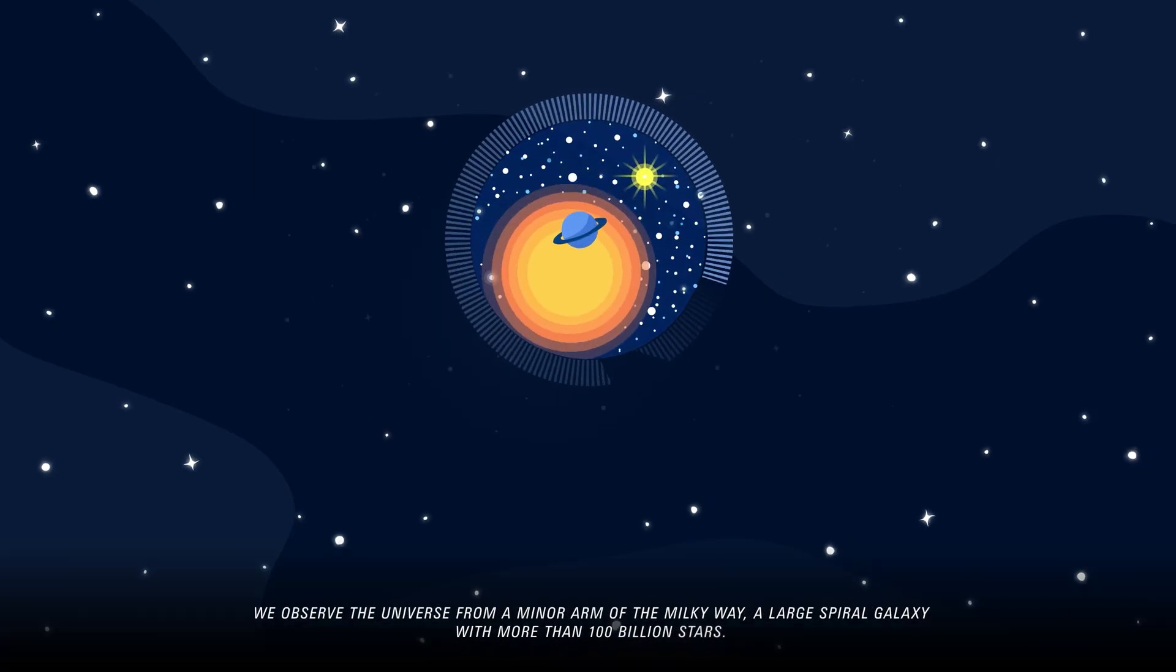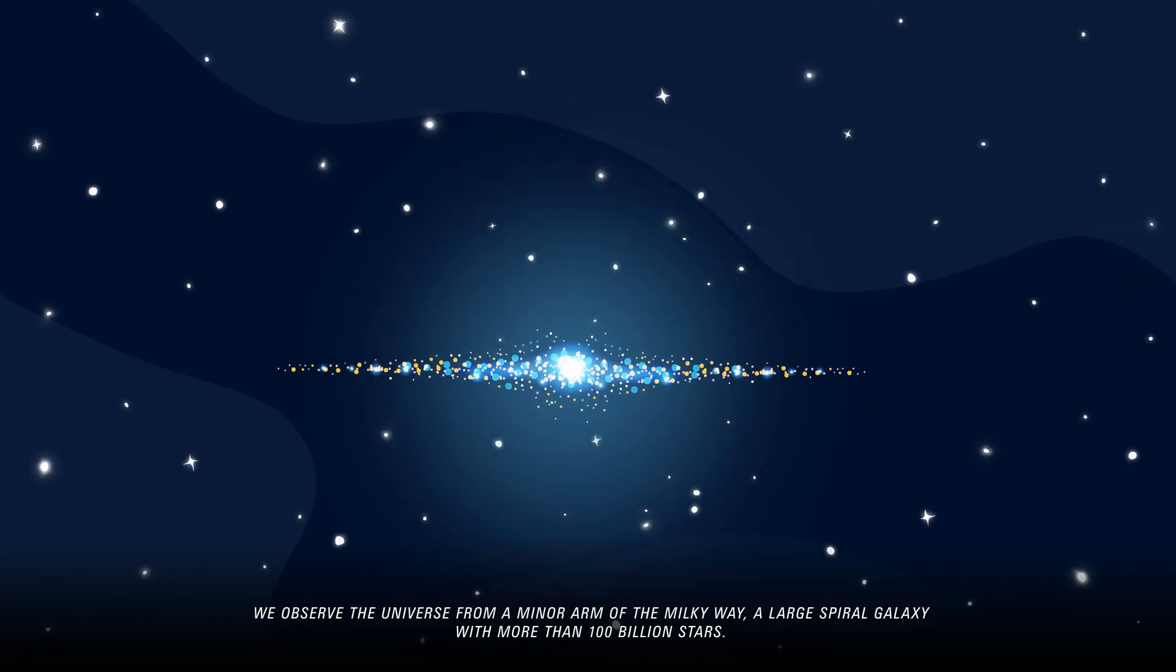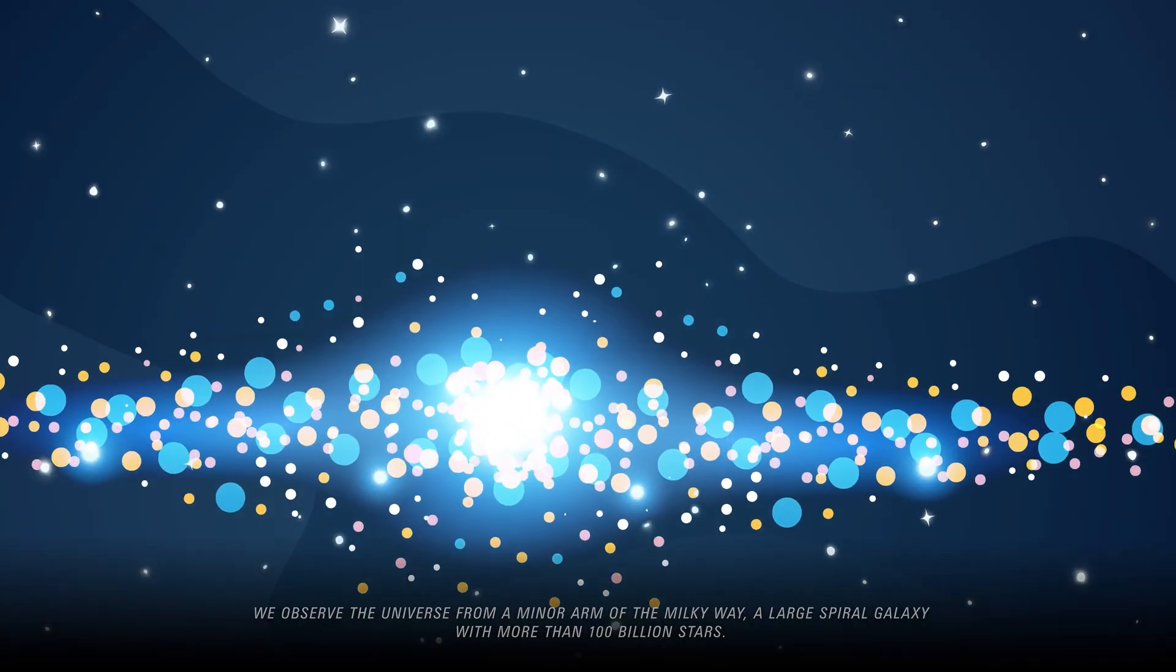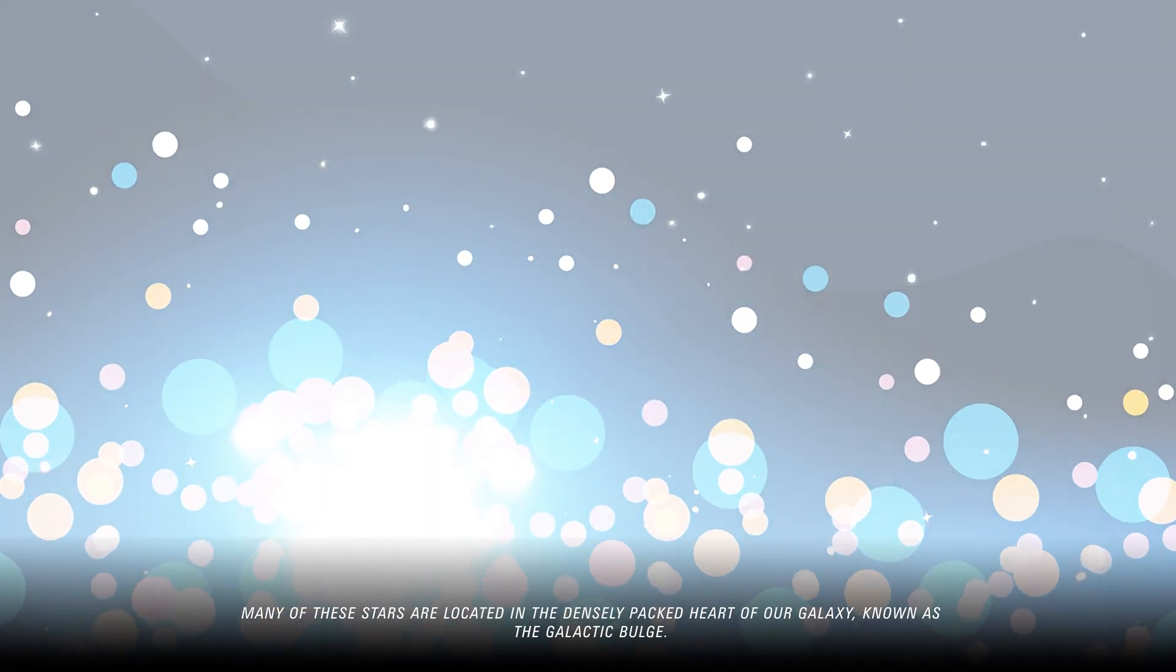We observe the universe from a minor arm of the Milky Way, a large spiral galaxy with more than a hundred billion stars. Many of these stars are located in the densely packed heart of our galaxy, known as the Galactic Bulge.